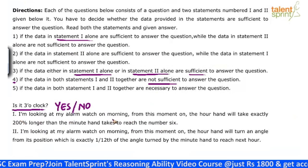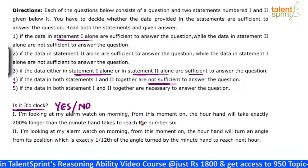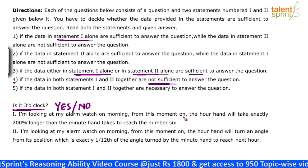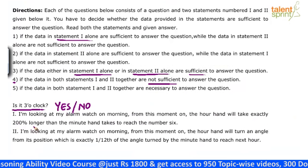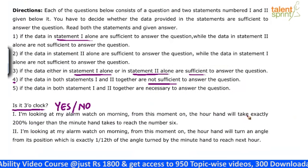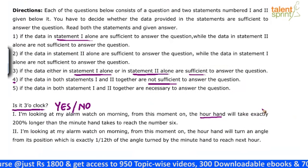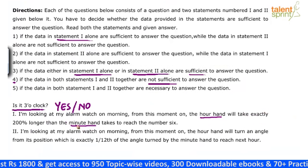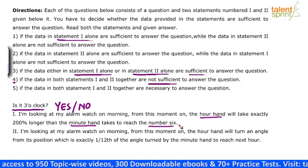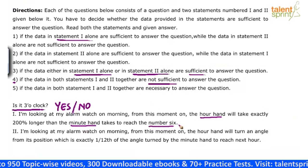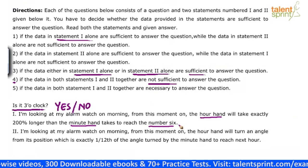I am looking at my alarm watch in the morning. From this moment, when I am looking at the watch, the hour hand will take exactly 200% longer. That means the hour hand will take two times longer than the minute hand to reach the number 6. Now, how do you verify whether this statement is sufficient to get an answer or not?